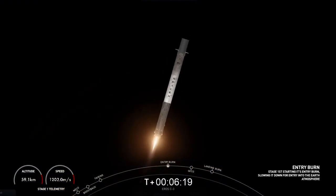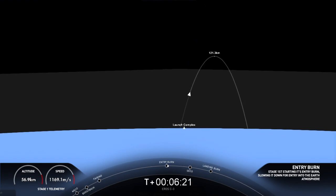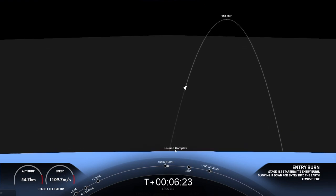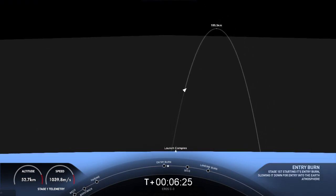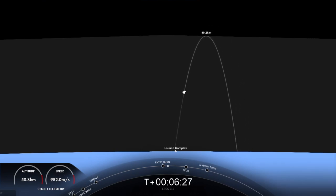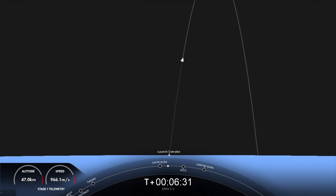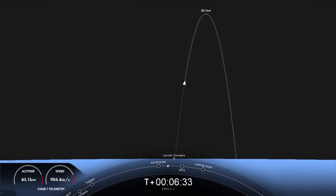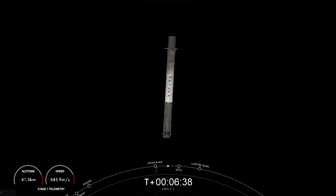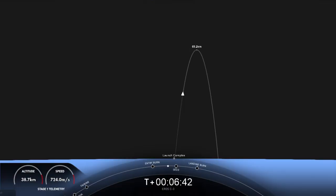Stage 1 entry burn, start up. Now, this burn is about 20 seconds or so long. Stage 1 FTS is saved. Stage 1 entry burn, shut down. As you heard and saw on your left-hand screen, those engines have shut down. That concludes the entry burn for the first stage.